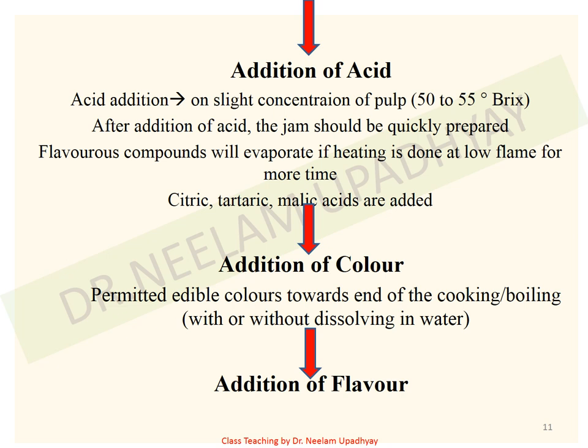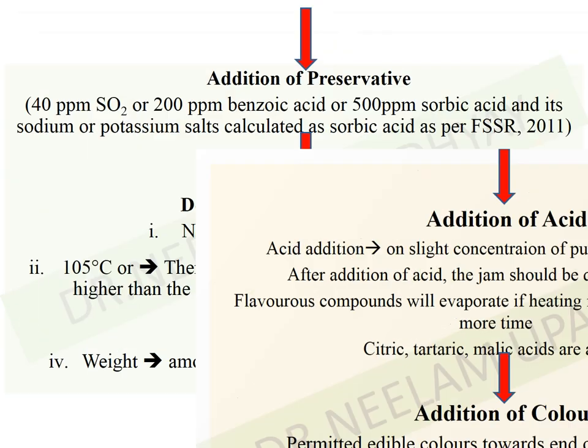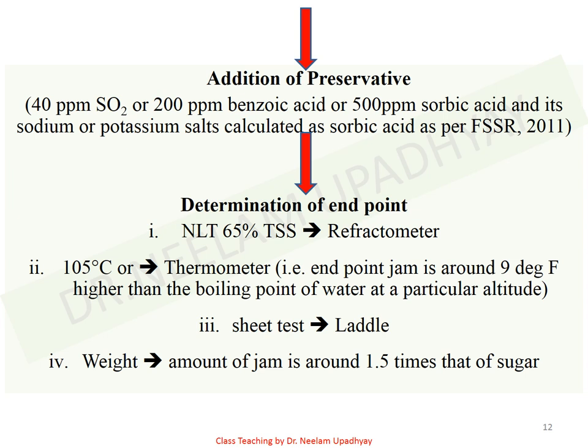The next step is addition of color — permitted edible colors given by FSSR 2011; these can be dissolved in water and then added. Then flavor can be added, which is optional. Lastly, preservative can be added. As per FSSR 2011, the permitted preservative in jam is 40 ppm sulfur dioxide, or 200 ppm benzoic acid, or 500 ppm sorbic acid and its sodium or potassium salt calculated as sorbic acid.